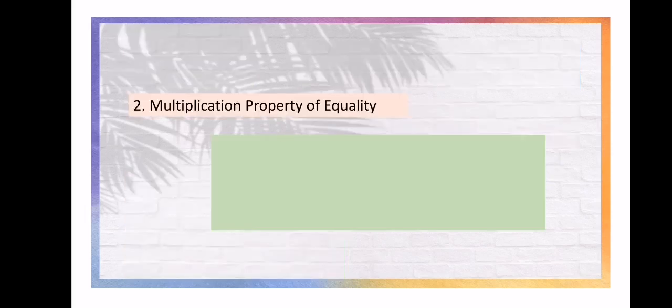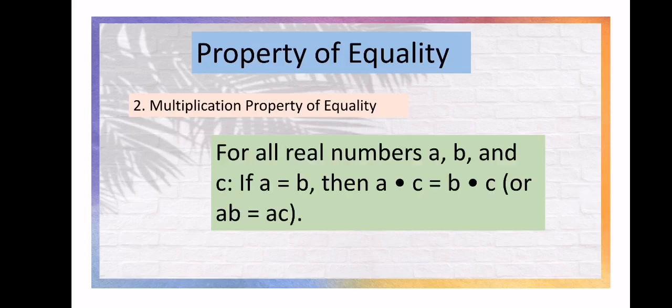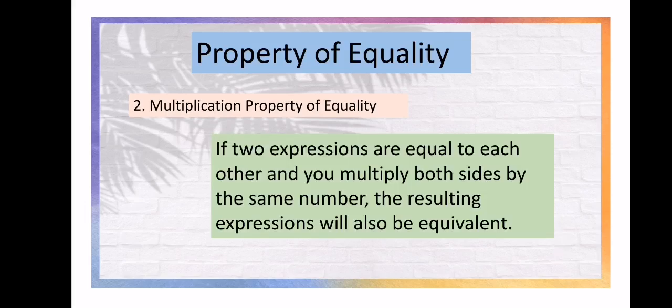Then, the Multiplication Property of Equality: for all real numbers A, B, and C, if A equals B, then A times C equals B times C, or AB equals AC. If two expressions are equal to each other and you multiply both sides by the same number, the resulting expressions will also be equivalent.